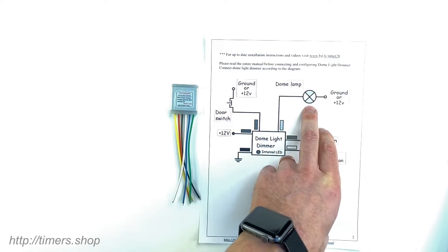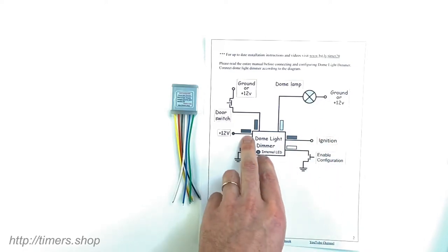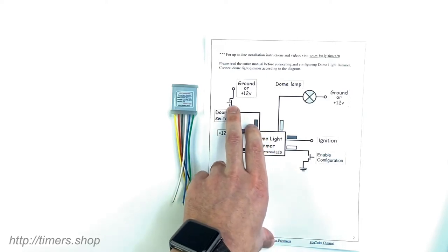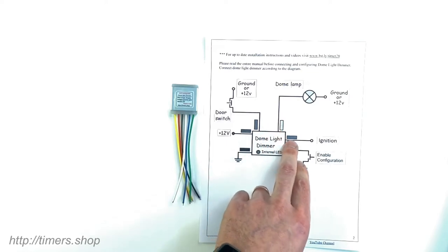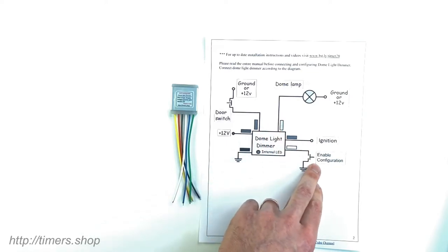The light could be either LED or incandescent. The power goes to the red wire, the blue wire goes to the door switches, the black is ground, yellow is output, green goes to ignition, and white enables configuration via Wi-Fi.